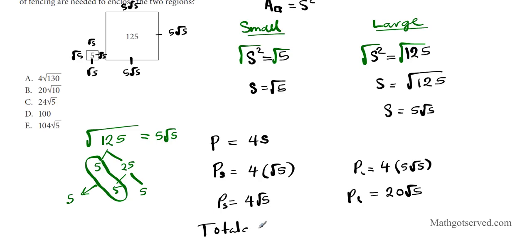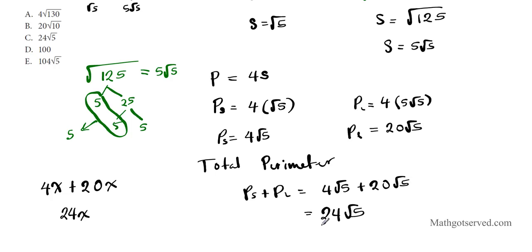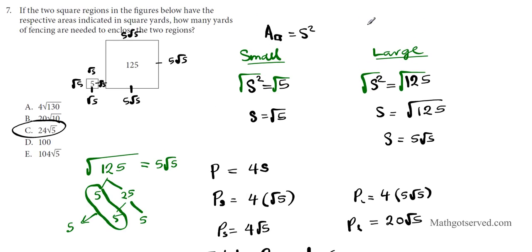What is the total perimeter to include both regions? Total perimeter is perimeter of the small plus perimeter of the large. So if you add 4 root 5 plus 20 root 5, it's like 4X plus 20X. You add just the coefficients. So 4 root 5 plus 20 root 5, you have 24 root 5. The answer is option letter C. Don't forget your geometry formulas. Area of a square is S squared and the perimeter of a square is 4S.